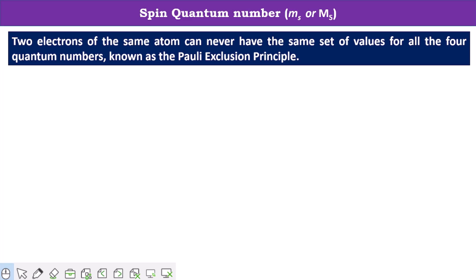Another point I would like to tell you: two electrons of the same atom can never have the same set of values for all the quantum numbers. This principle is known as Pauli's exclusion principle.